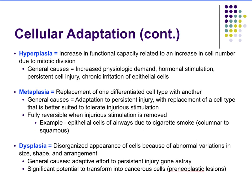Hyperplasia is the increase in cell number due to mitotic division. General causes include increased physiologic demand, hormone stimulation, persistent cell injury, and irritation of epithelial cells — all of which can cause cells to increase in number.